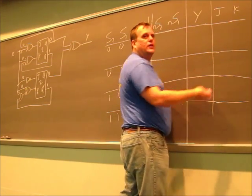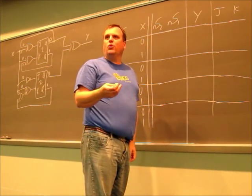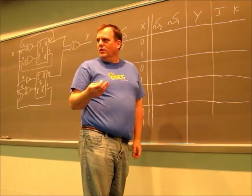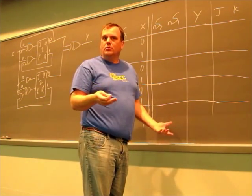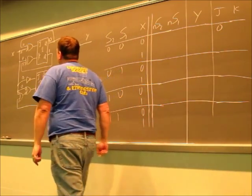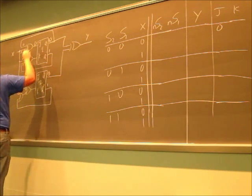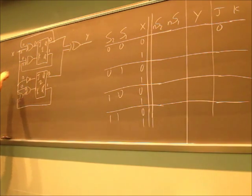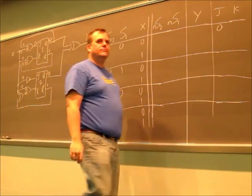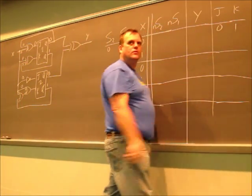0 XOR 0. XOR only gives you a 1 if they're different. That's the whole thing, odd numbers. So, they're both the same, so it's 0. 0 XOR 1. 1.